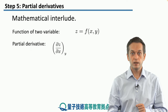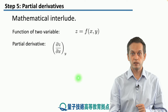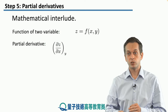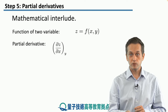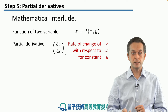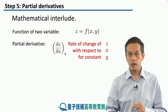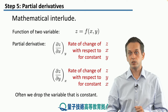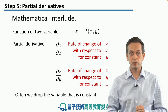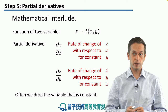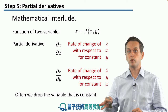What the partial derivatives tell us is how much the function is changing with respect to one of these coordinates while keeping the other constant. For example, we write ∂z/∂x while keeping y constant. The curly ∂ differentiates the partial derivative from the ordinary d. Similarly, we can write ∂z/∂y while keeping x constant. Often we drop the subscripts and simply write ∂z/∂x or ∂z/∂y, implying the other variable is held constant.